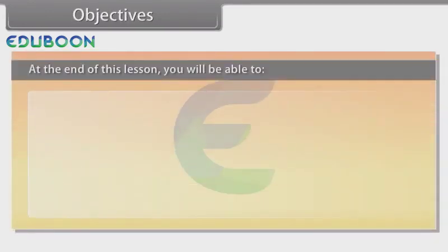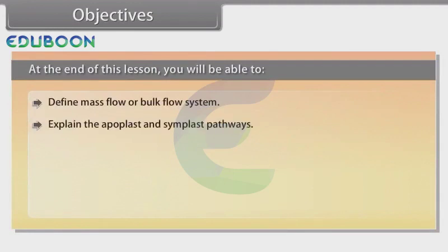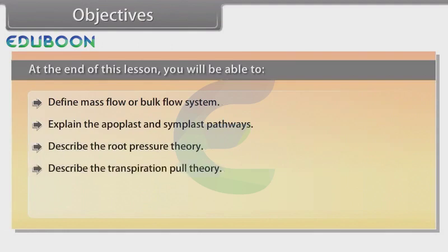At the end of this lesson, you will be able to: define mass flow or bulk flow system; explain the apoplast and symplast pathways; describe the root pressure theory; describe the transpiration pull theory; and explain the transpiration process.